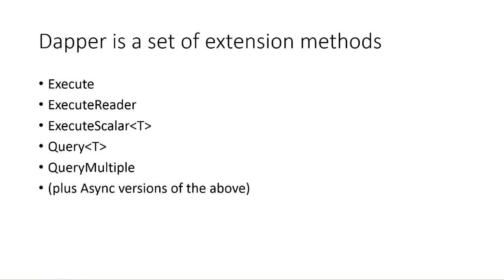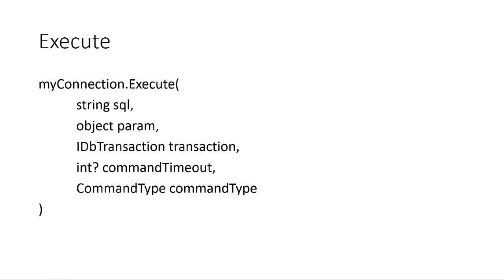Here's the signature of Execute — some pseudocode. You have a database connection object and call the Execute extension method on it. The only required argument is a SQL string, and it will execute that SQL against your database connection. Optionally you can parameterize queries, use a transaction, specify a timeout, or specify a command type — which is good for stored procedures. All these are optional.